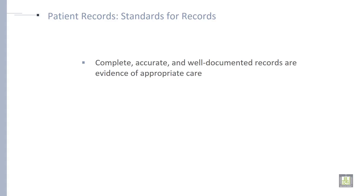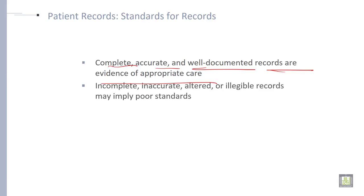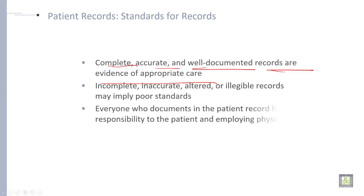Patient record — what are the standards for records? A standard should be complete, accurate, and well-documented records are evidence of appropriate care. Incomplete, inaccurate, altered, or illegible records may imply poor standard.